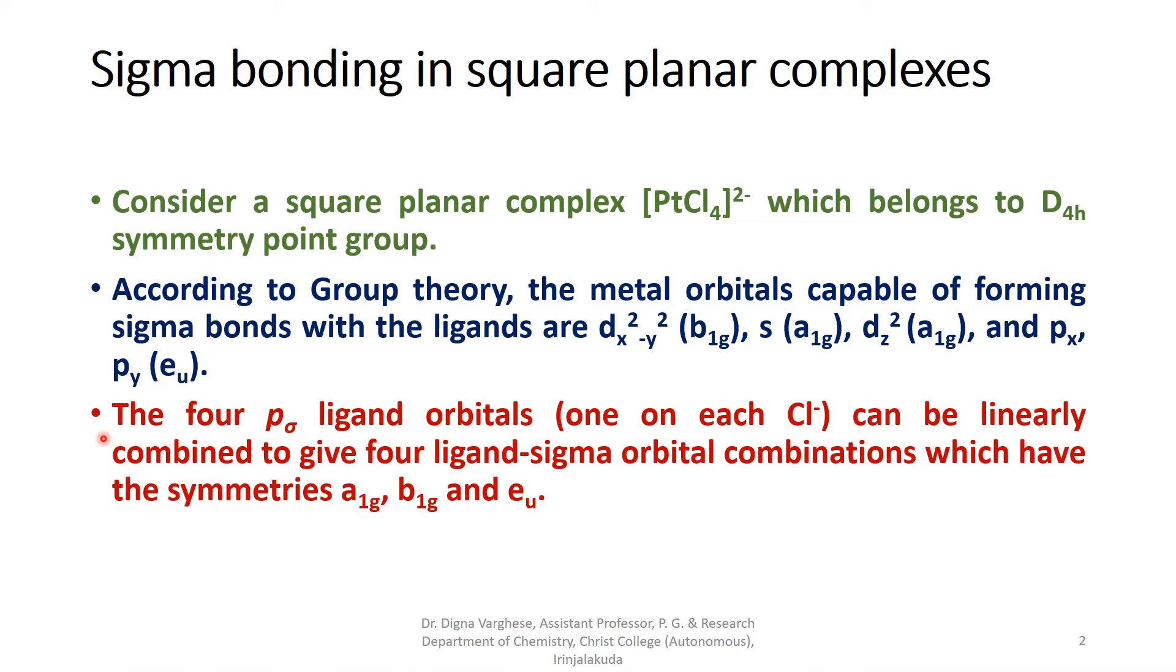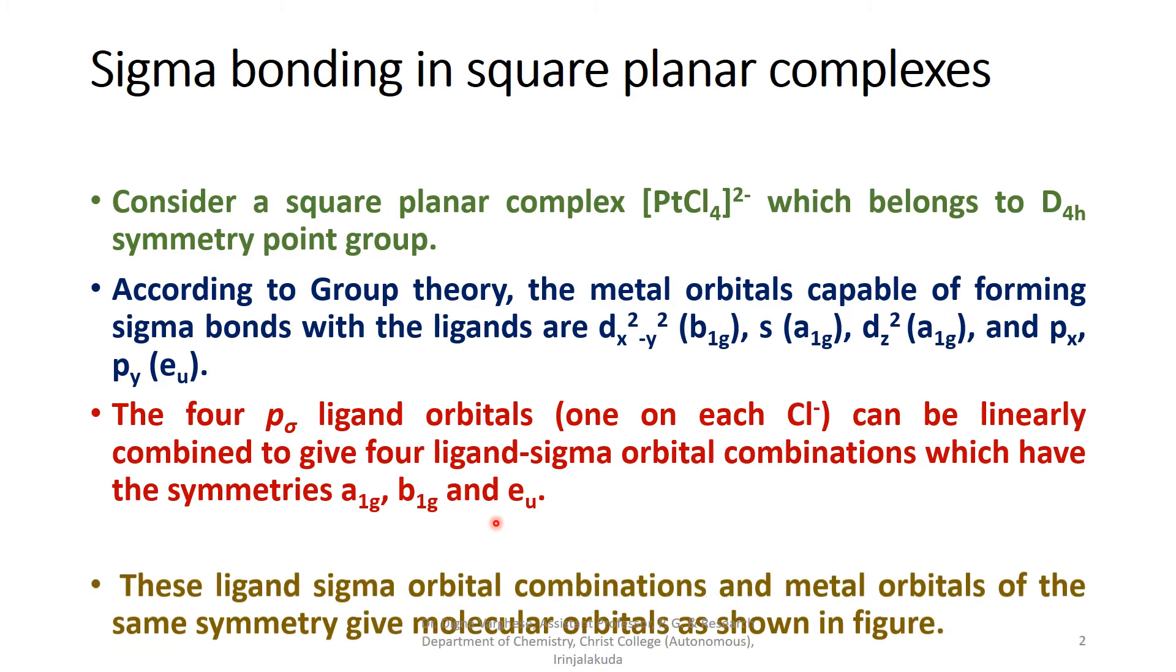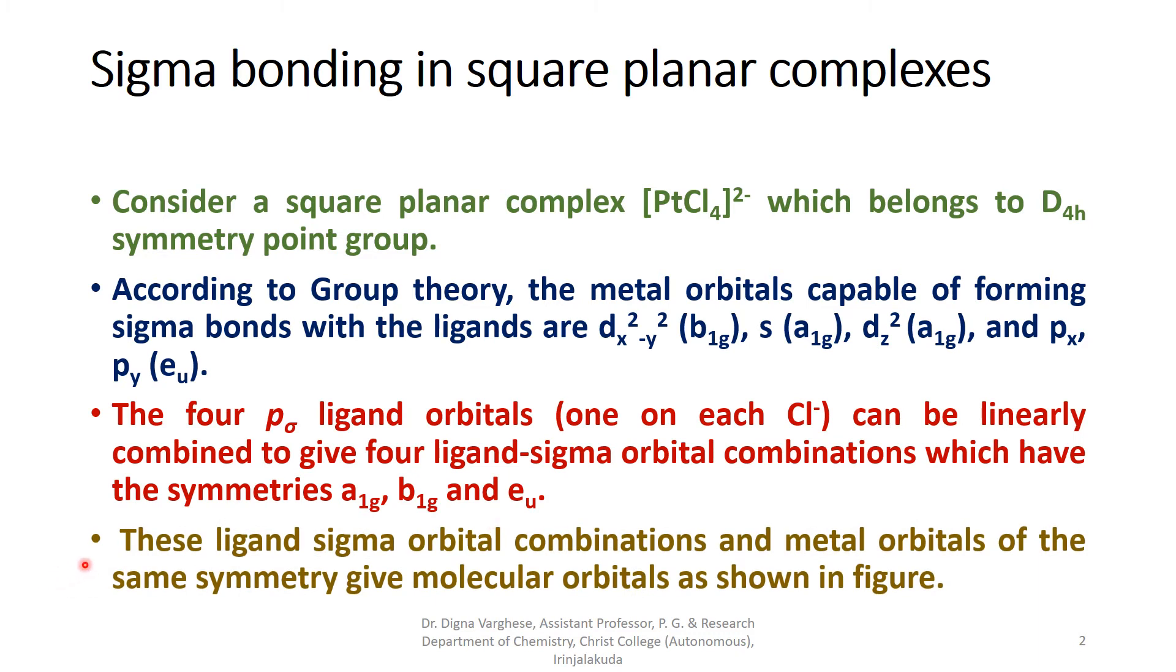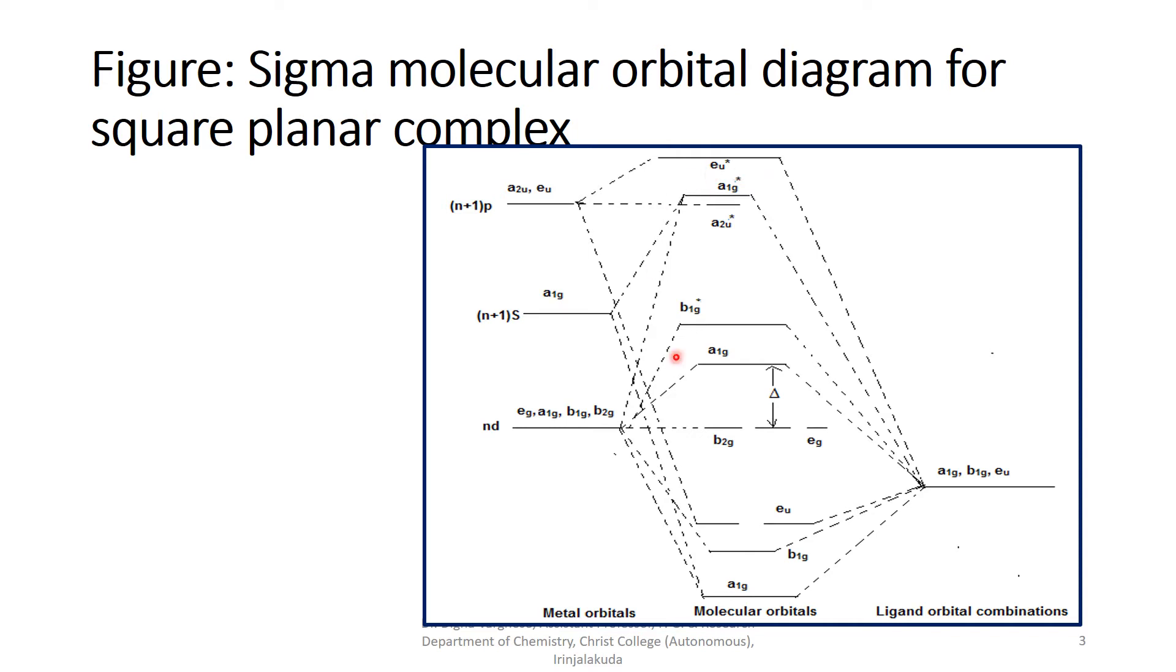The four p-sigma ligand orbitals, one on each chloride ion, can be linearly combined to give four ligand-sigma orbital combinations which have the symmetries A1g, B1g and Eu. Likewise, the octahedral complexes, as we have already studied, these ligand-sigma orbital combinations and metal orbitals of the same symmetry give molecular orbitals as shown in the figure. So, we can draw the molecular orbital diagram for a square planar complex.